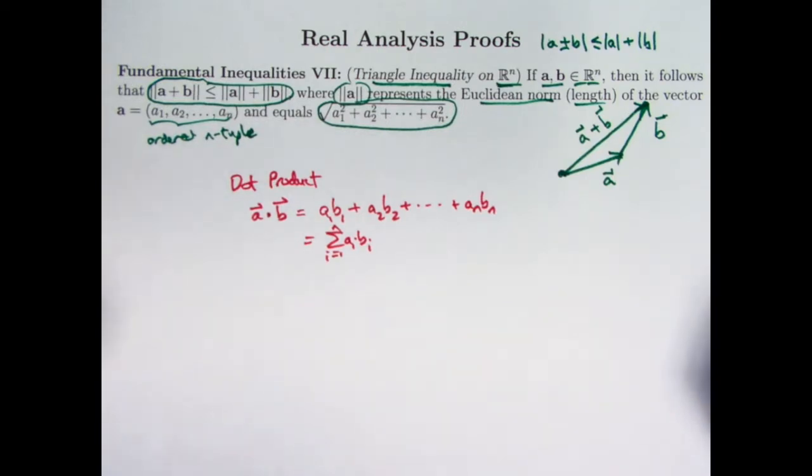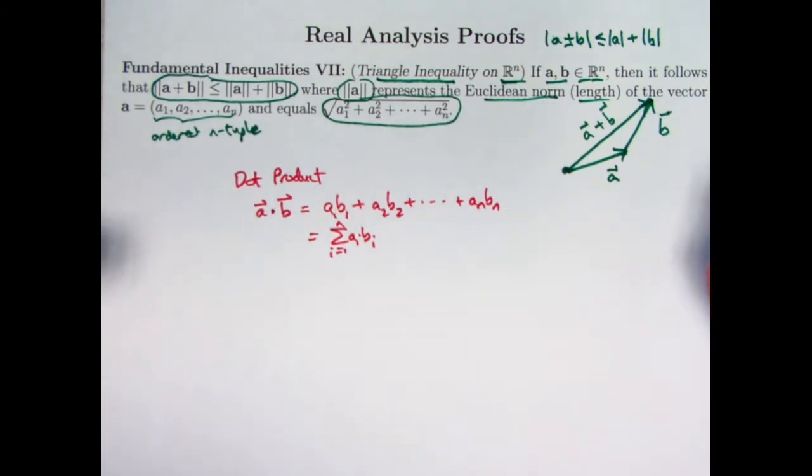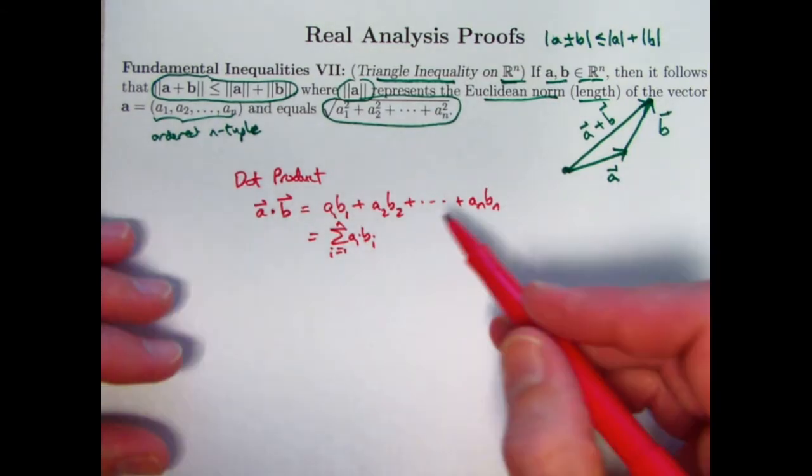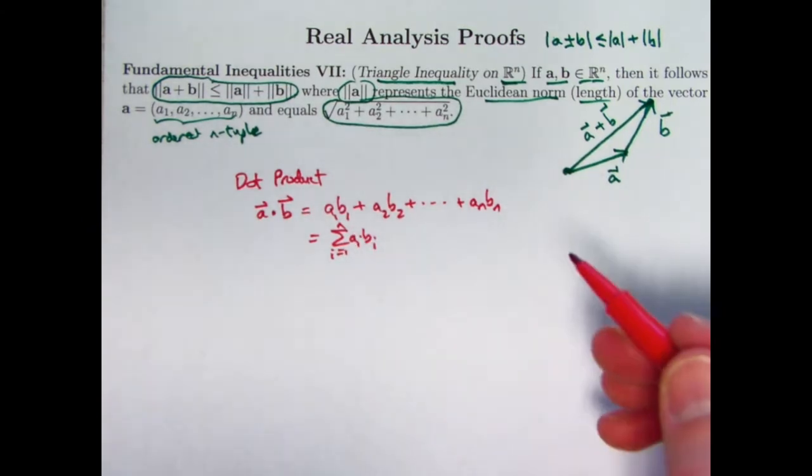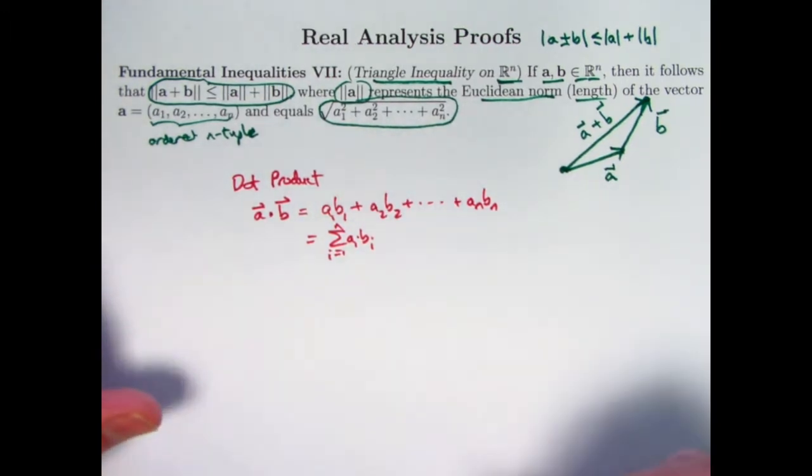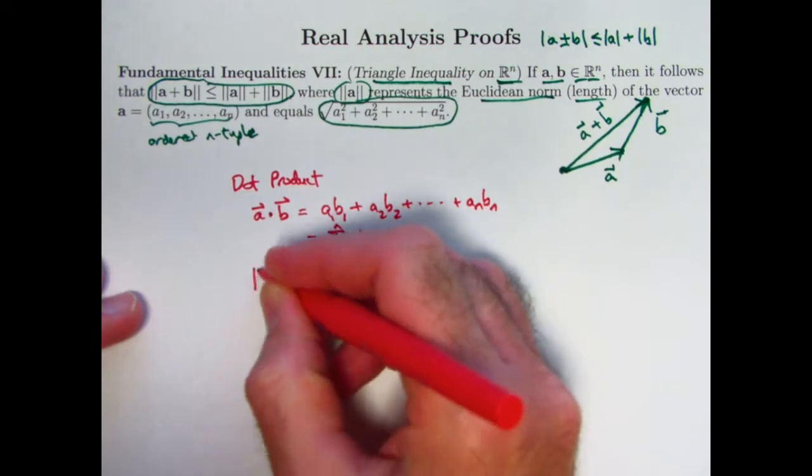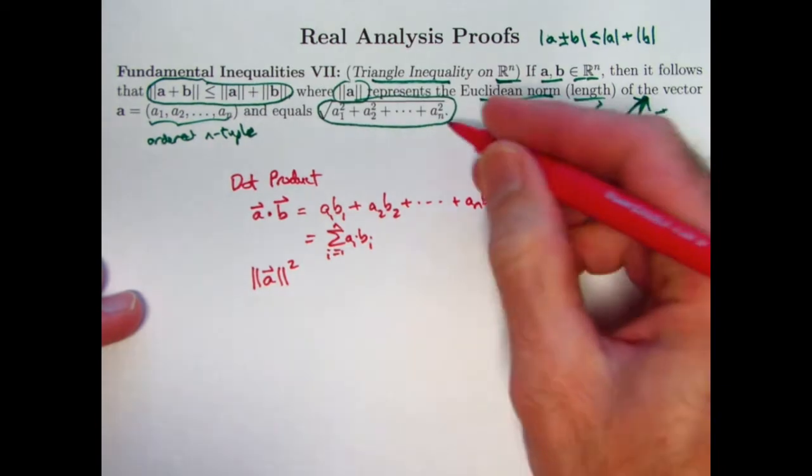You can prove various things about dot product. For example, the dot product is commutative. If I do b·a instead, by the commutative property of real number multiplication, this thing would be the same as what I would get if I do b·a. b1 times a1 plus b2 times a2, etc., plus bn times an is the same as what you see here. There's also a distributive property for dot products over vector addition. That's something we're actually going to use. We'll make use of the commutative property as well. We'll make use of the fact, the observation,